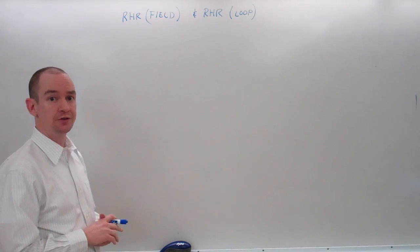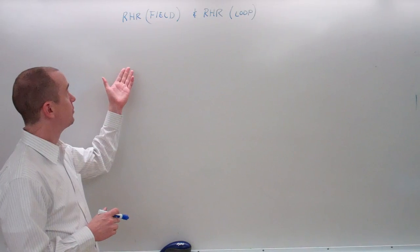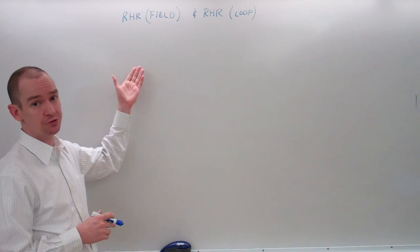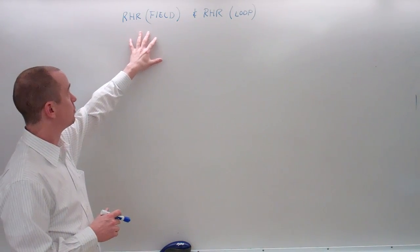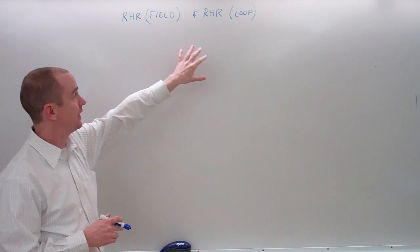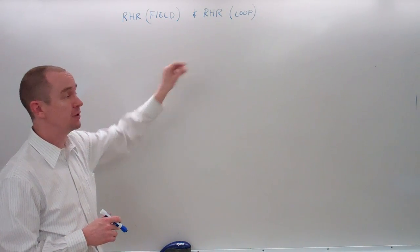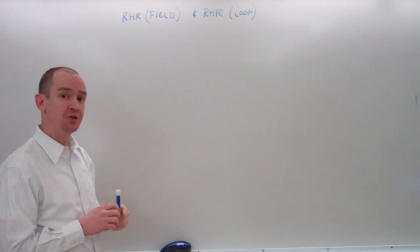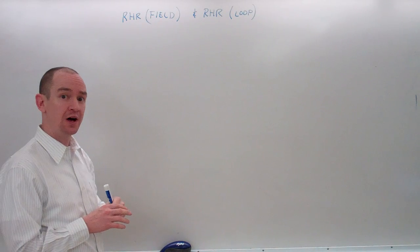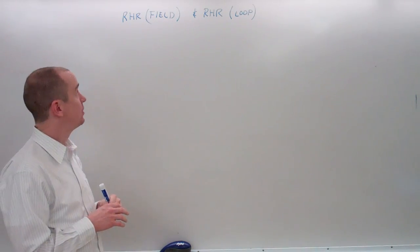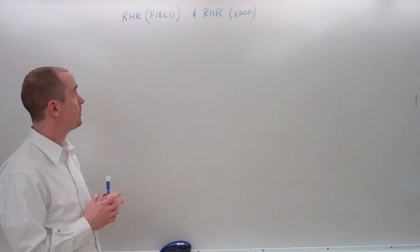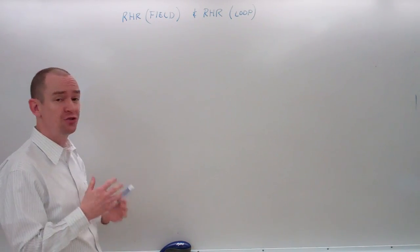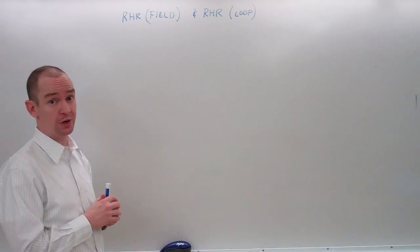Hello, I'm Mr. Klingler, and today we're going to talk about two right-hand rules: right-hand rule field and right-hand rule loop. Both of these will allow you to find the direction of current and magnetic field, assuming you know the other one.